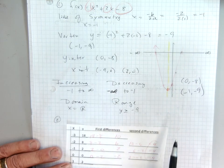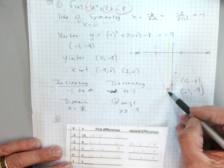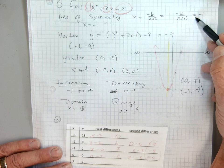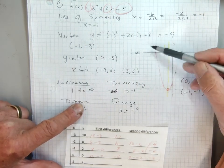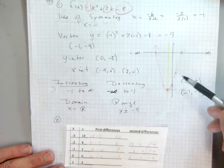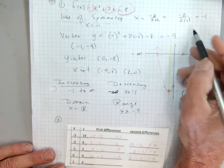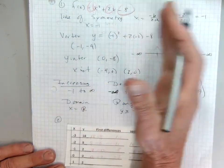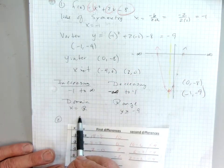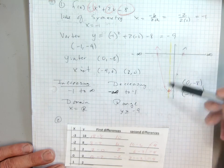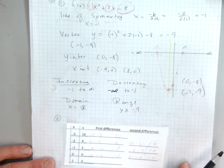Now, it increases and decreases. It's going uphill from negative 1 to infinity, increasing. It's going downhill, decreasing from negative infinity to negative 1. The domain, because x goes forever back and forth, y is always moving over, the domain's all real numbers. And the range is from negative 9 up, or y is greater than or equal to negative 9.